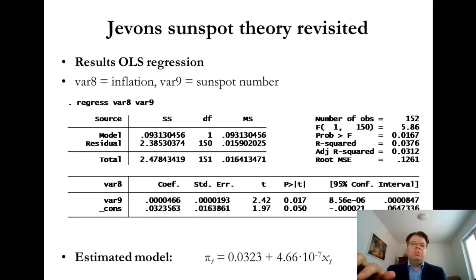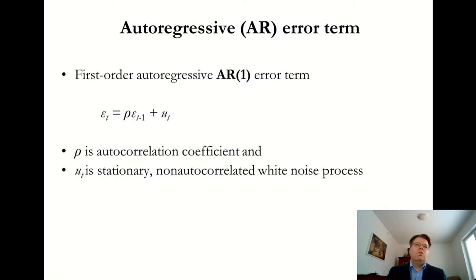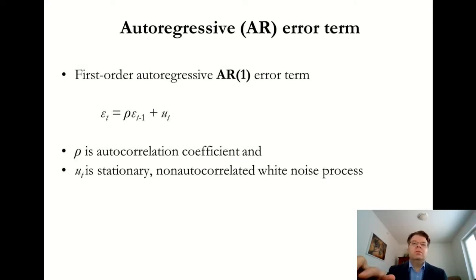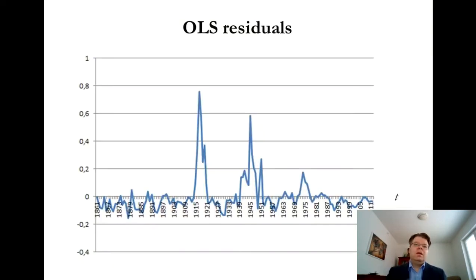But what about the possibility of autocorrelation? We can model it using the autoregressive process introduced in the previous video. We can think of a first-order autoregressive error term — replacing the random variable V with epsilon — which implicitly makes the error terms somewhat dependent on errors in the previous period.